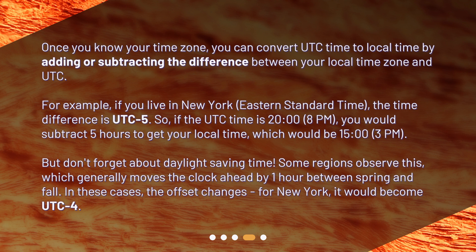For example, if you live in New York, Eastern Standard Time, the time difference is UTC minus 5. So if the UTC time is 20:00 (8:00 p.m.), you would subtract 5 hours to get your local time, which would be 15:00 (3:00 p.m.). But don't forget about daylight saving time. Some regions observe this, which generally moves the clock ahead by 1 hour between spring and fall. In these cases, the offset changes — for New York, it would become UTC minus 4.